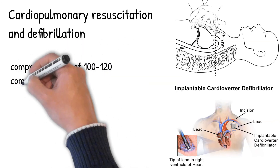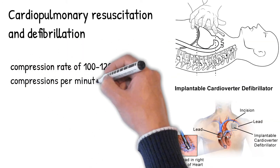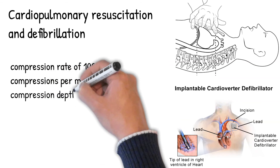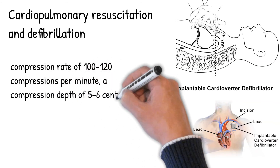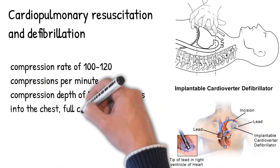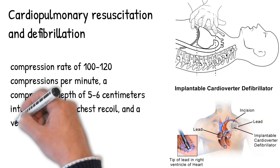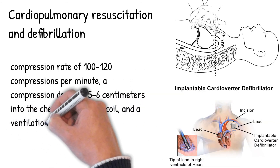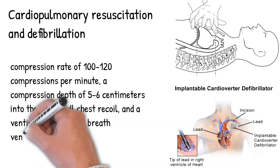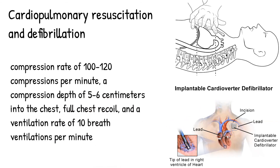After defibrillation, chest compressions should be continued for 2 minutes before a rhythm check is again done. The recommended compression rate is 100 to 120 compressions per minute, a compression depth of 5 to 6 centimeters into the chest, with full chest recoil, and a ventilation rate of 10 breath ventilations per minute.